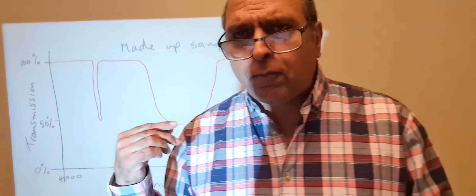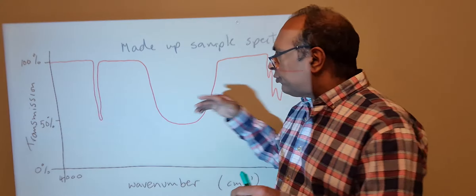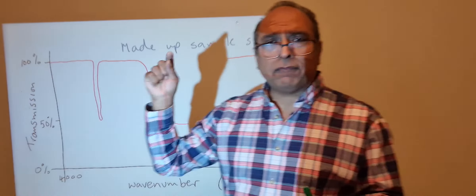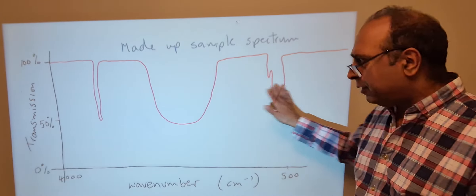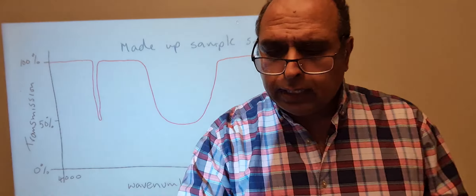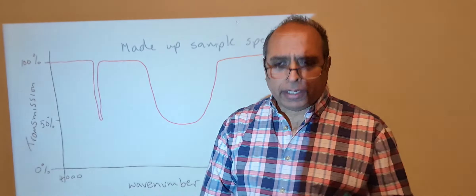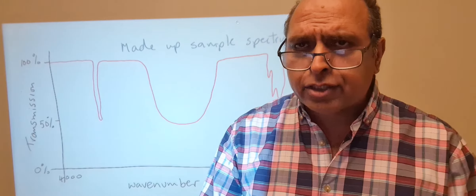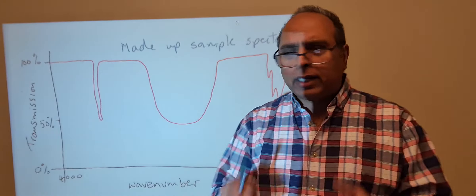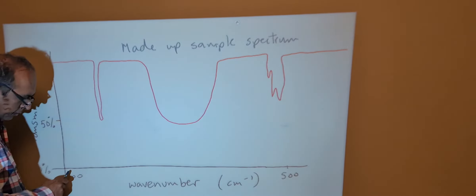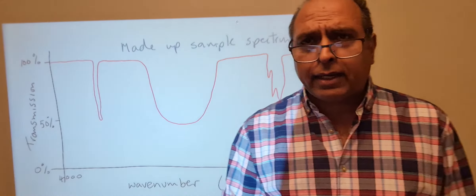To recap: if light passes through without being absorbed, transmission is 100%. If light is absorbed, transmission drops and we call those dips peaks. They may overlap, be broad, or be sharp. The idea is that we take an unknown sample, shine light of all infrared frequencies through it, and examine the resulting spectrum.